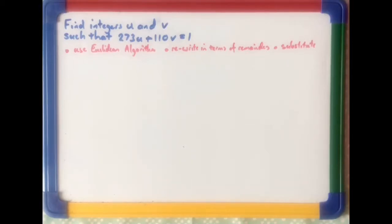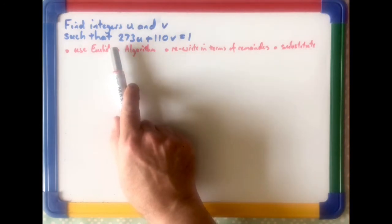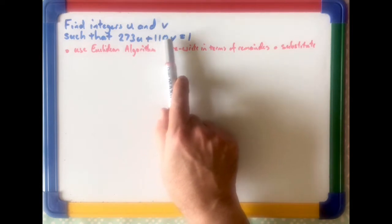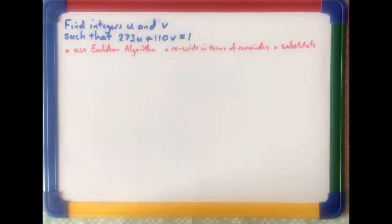We are now looking at problems of this sort, where they're asking us to find two integers, u and v, such that 273u and 110v equals 1.